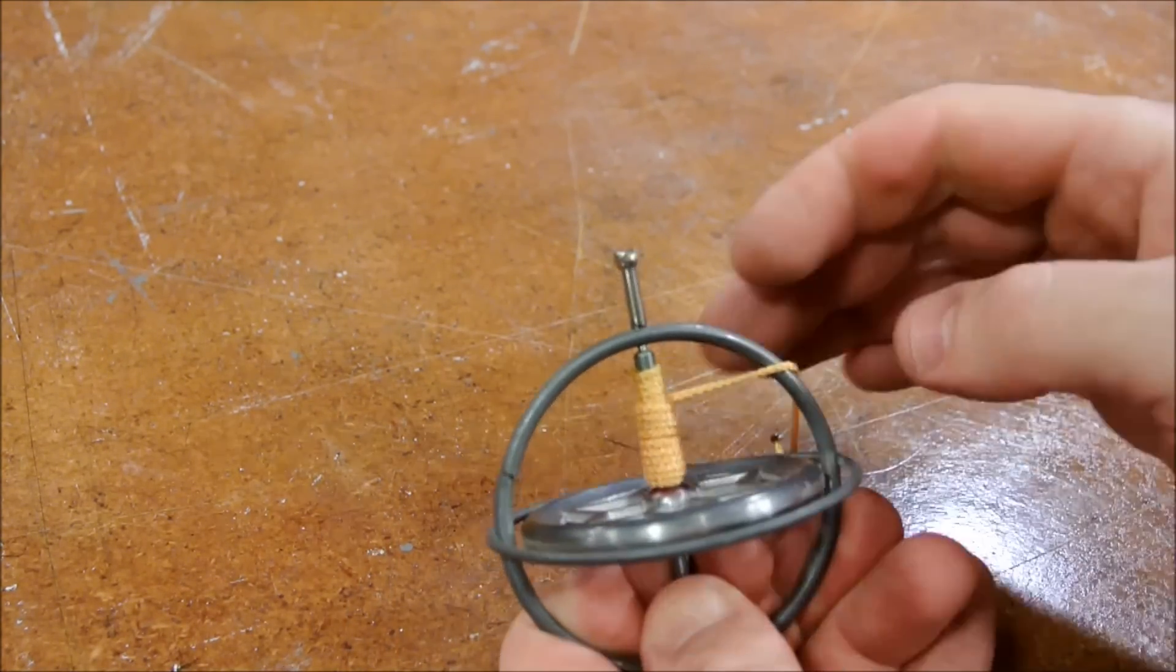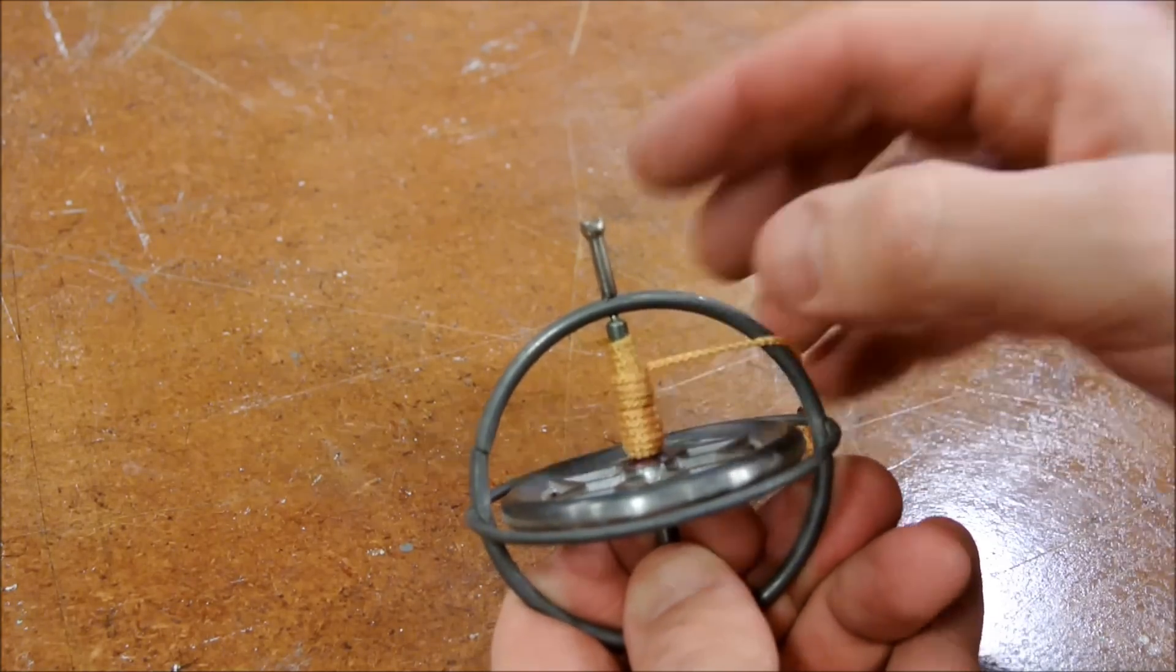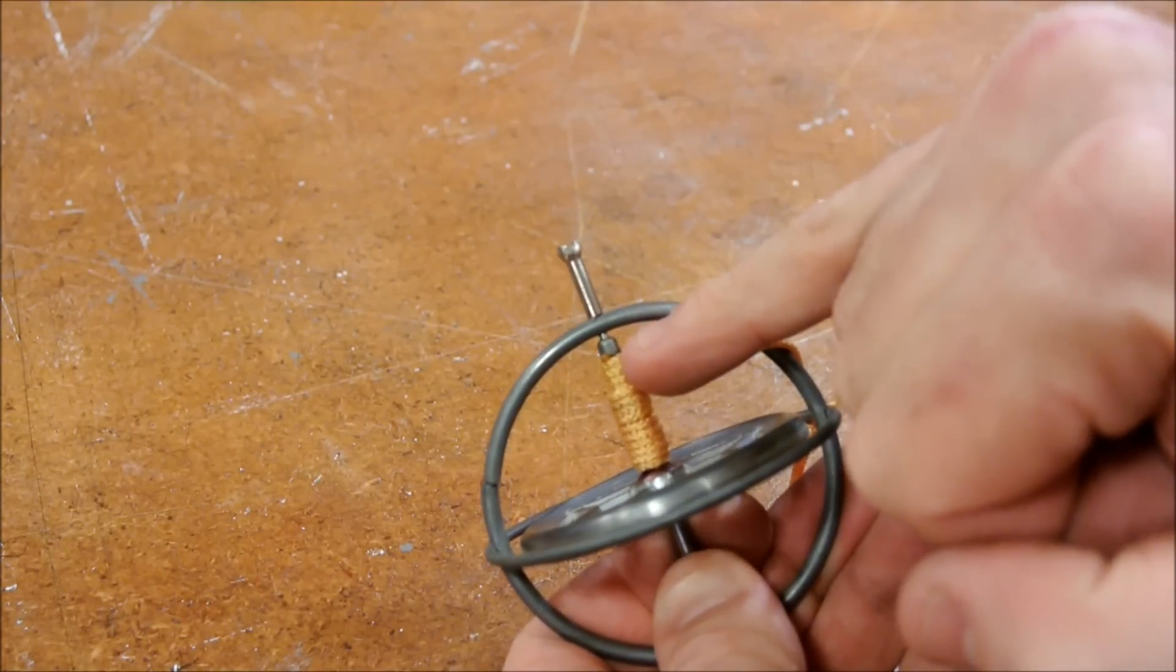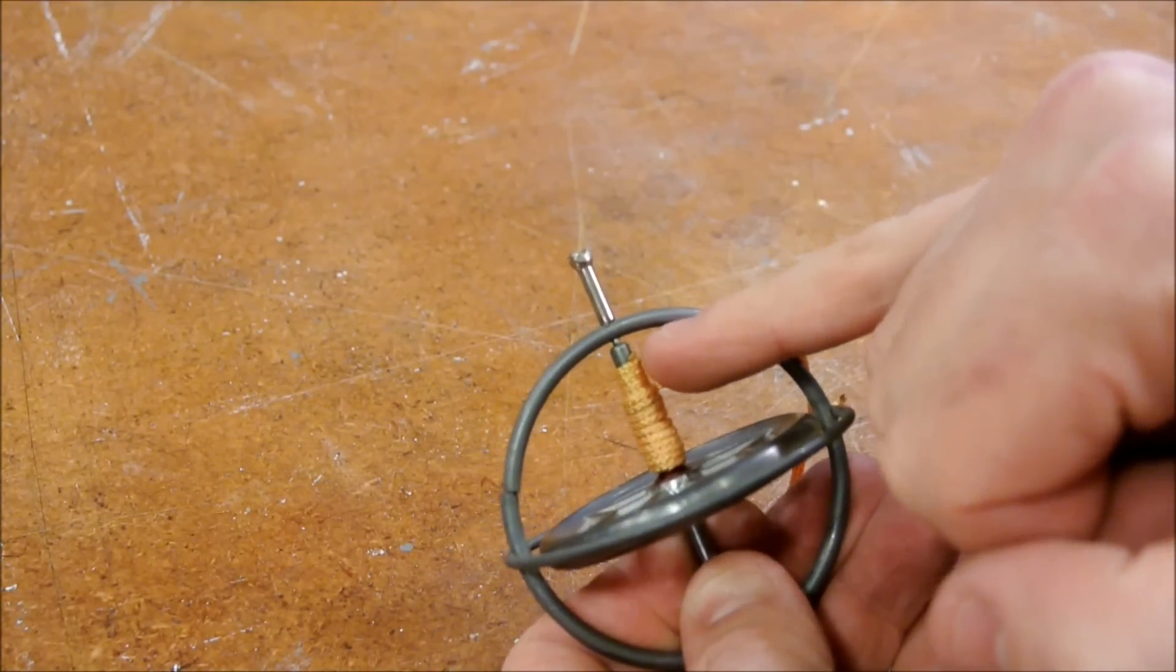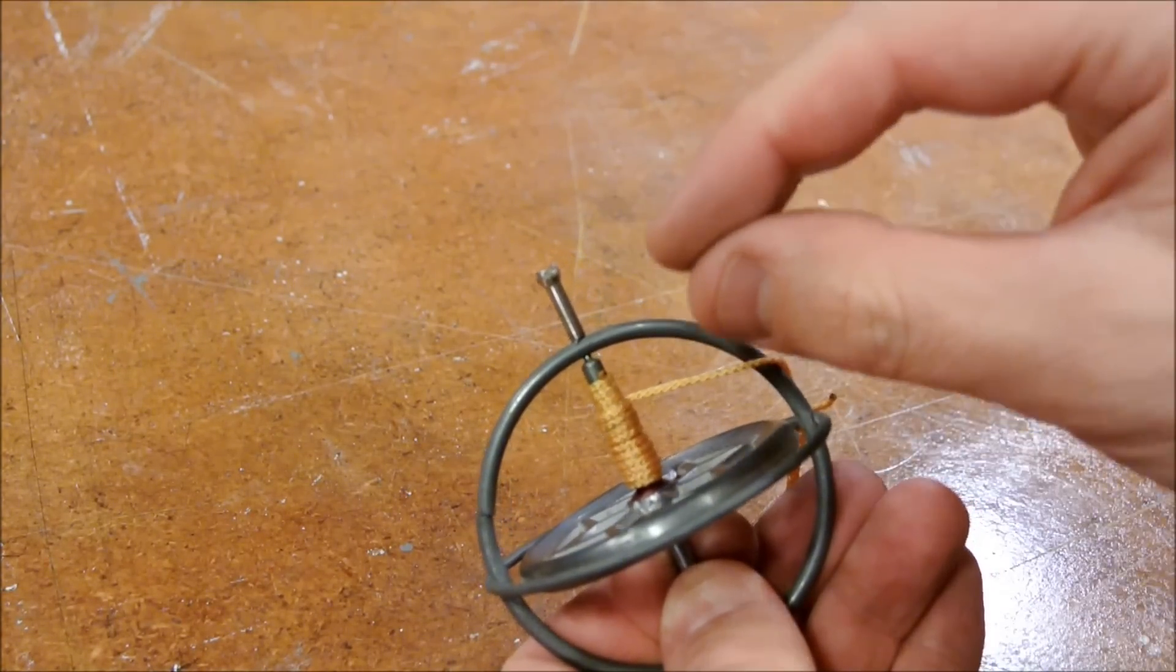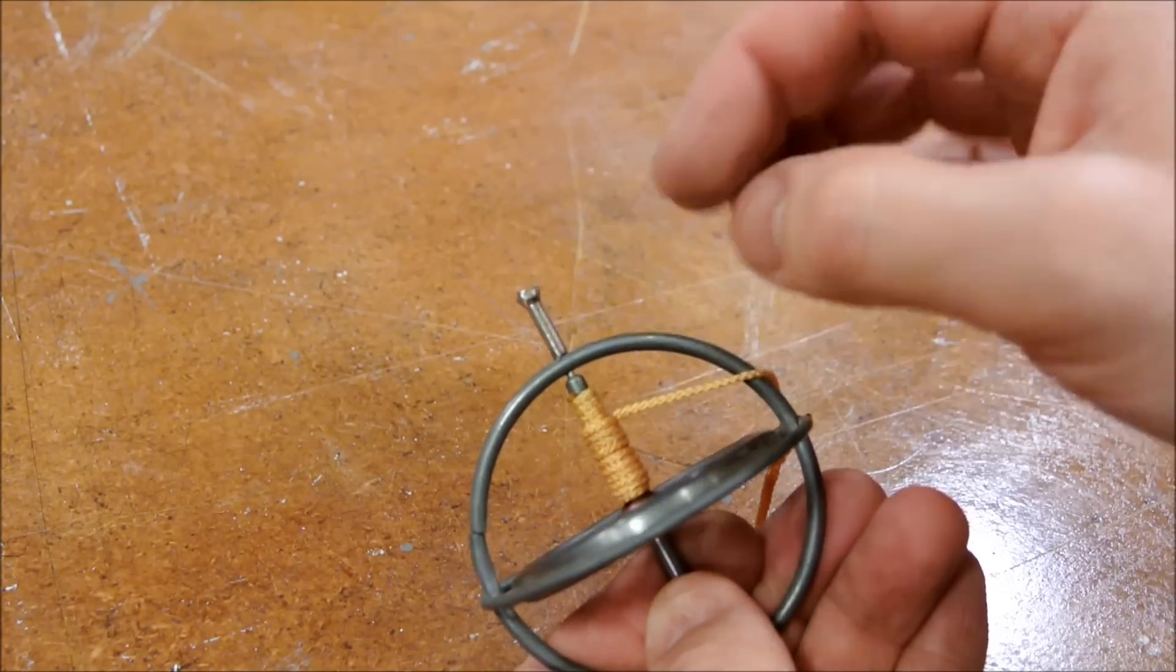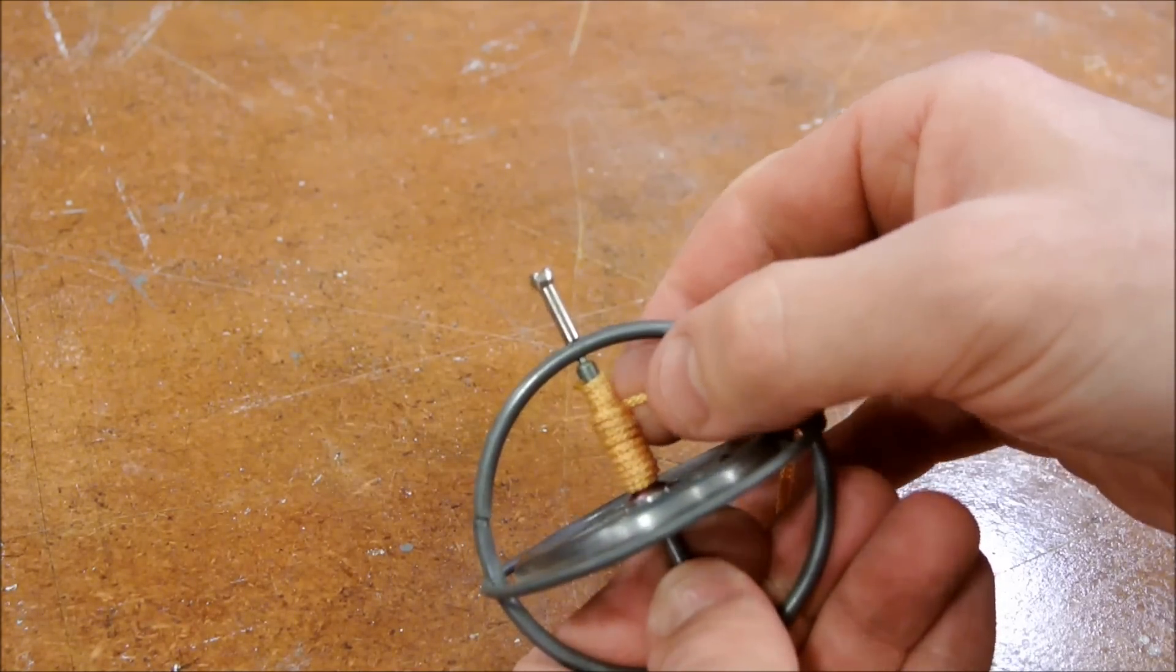And you want to make two full wraps around the axle. On the end of the bricklayers twine, you want to melt it so that it doesn't fray, so that there's a hard needle-like end to it that you can just stick through the hole.